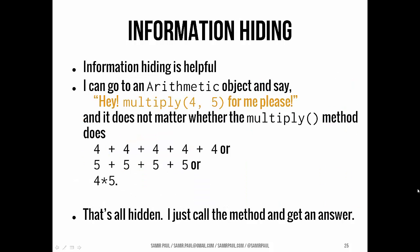So example, you know, if I go to an arithmetic object and I say, Hey, multiply four and five for me, please. Hey, there's a ton of different ways to do this. Oh, there's not a ton, but there's three. You could add four, five times. You could add five, four times, or you could just multiply four times five. We don't know. We don't care which way multiply does it. That's all hidden from us. I just call the method and I get the answer. So information hiding is really, really powerful and useful in that sense.